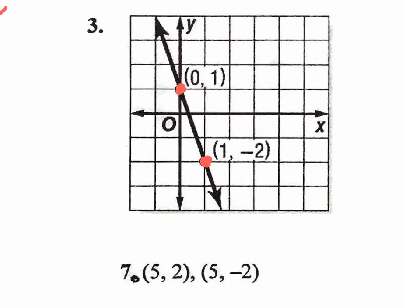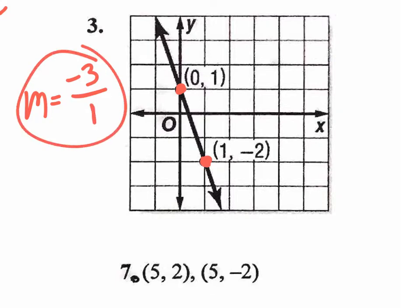Let's take a look at number three. Again, we're going to be comparing two dots — this one and this one. From here to here, do you go up or do you go down? You go down. How many do you go down? Three. So when we think about slope, which is rise over run, going down three means negative three. The run is one. So the slope is negative three over one.